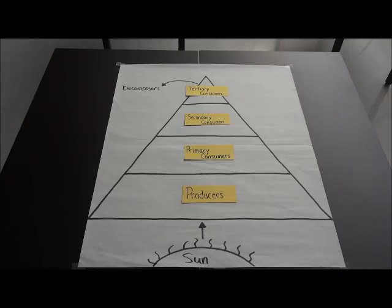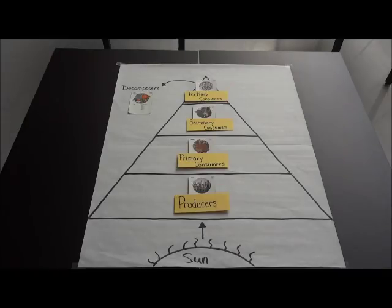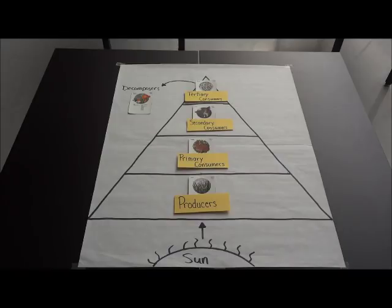Now that we have all the levels labeled, let's go ahead and add our food chain. We have now added all of our food chains to the energy pyramid. Our grass are our producers, the rabbit is the primary consumer, the owl is the secondary consumer, the bobcat is the tertiary consumer, and the fungi is our decomposer for this energy pyramid.